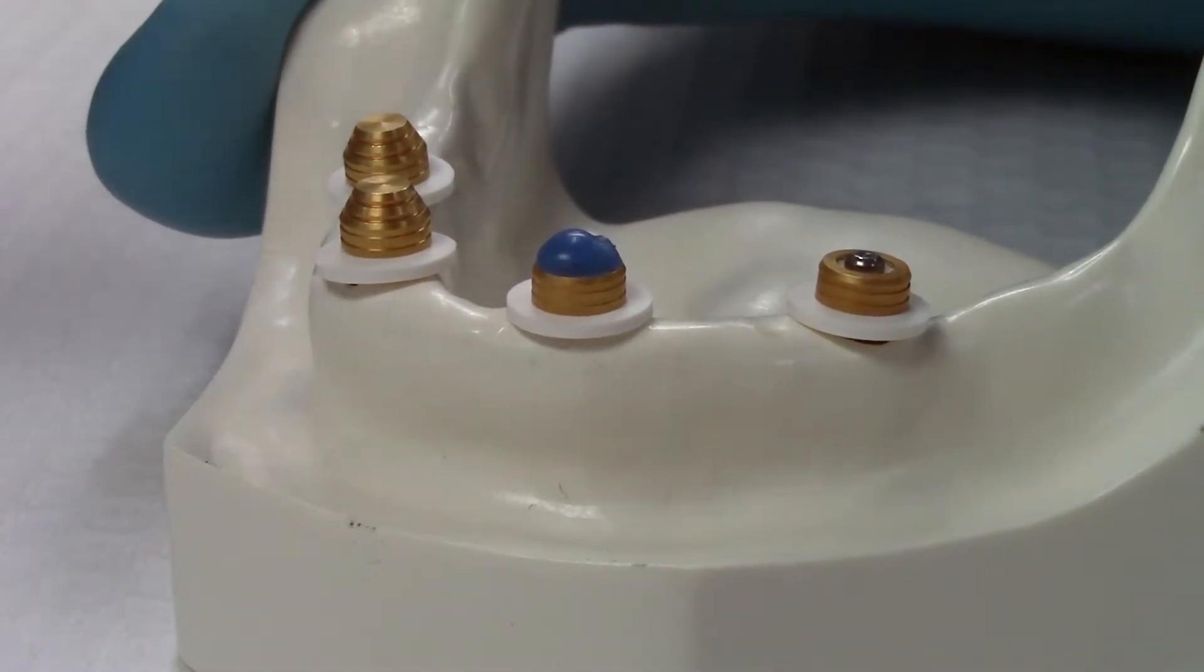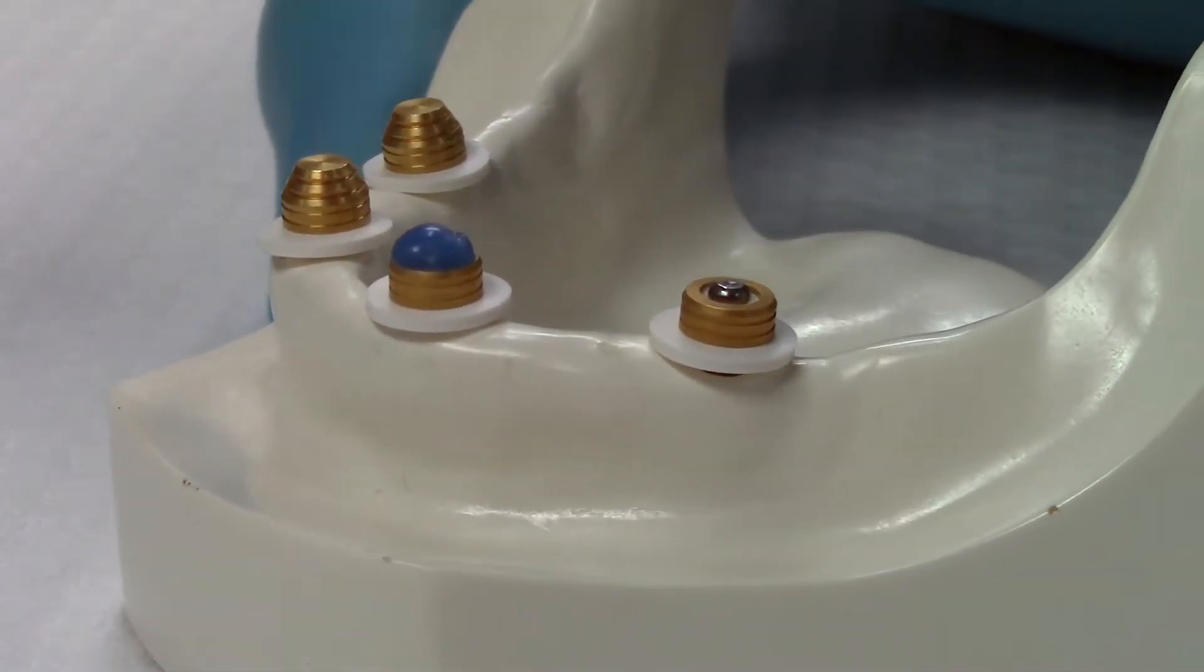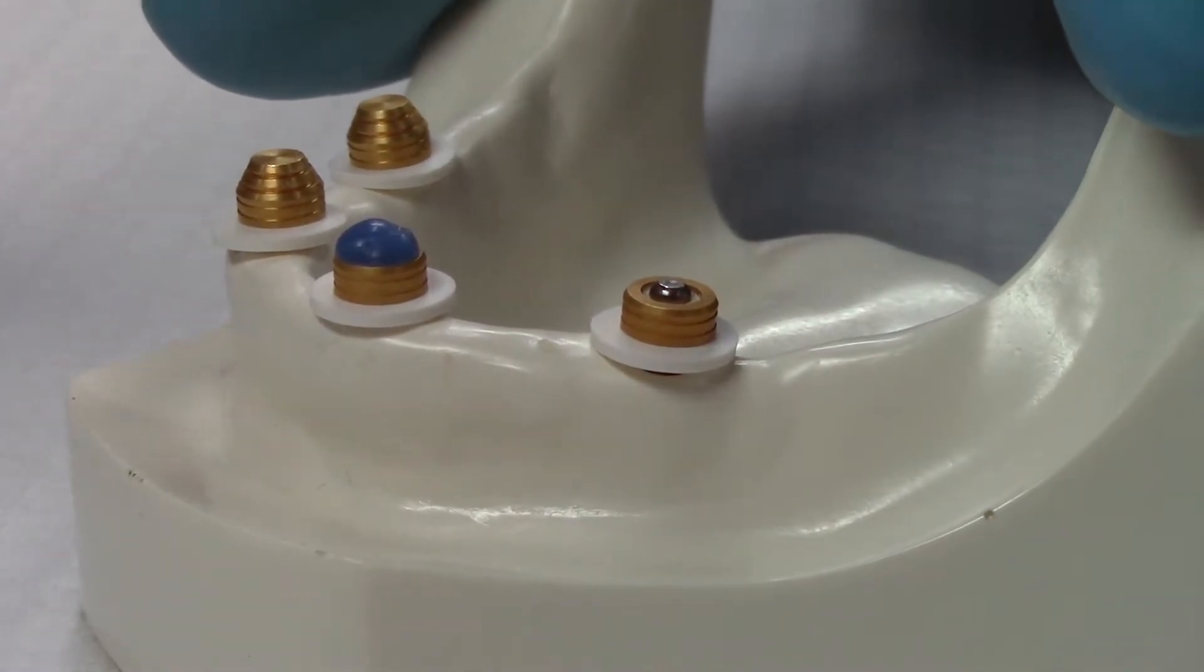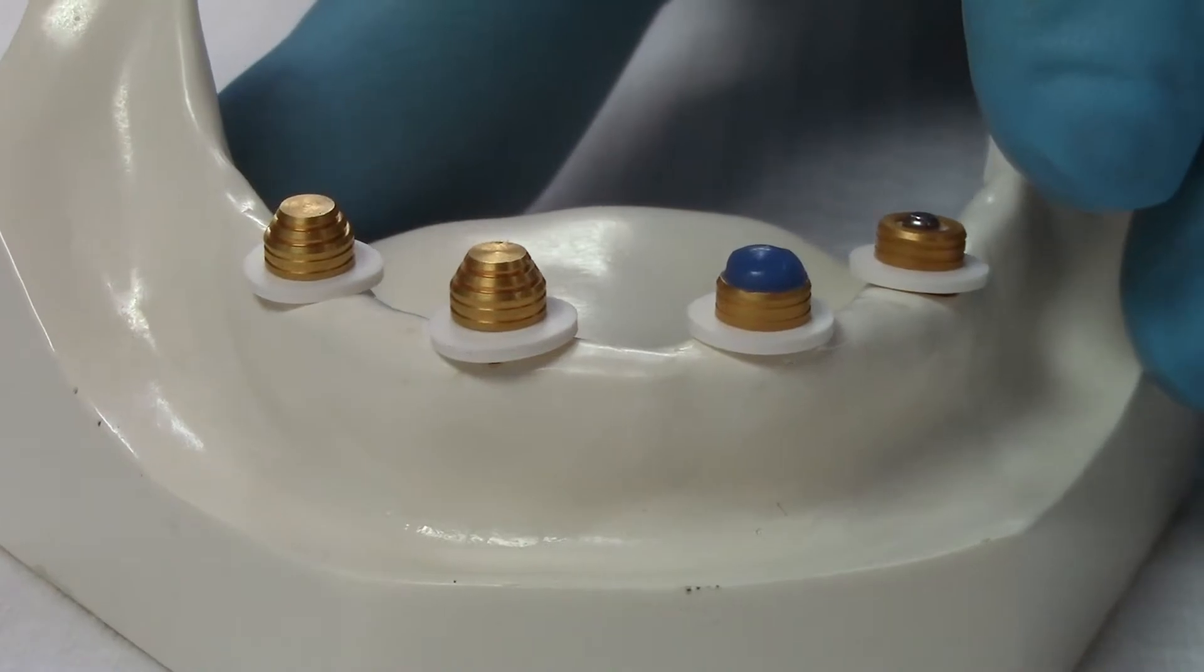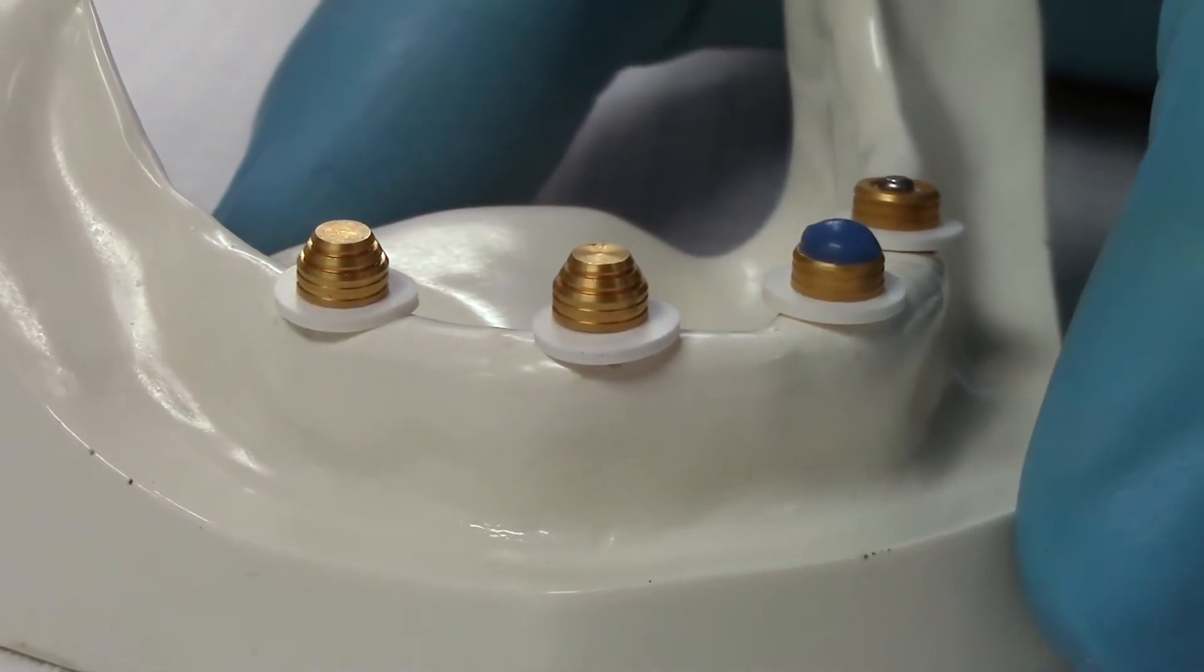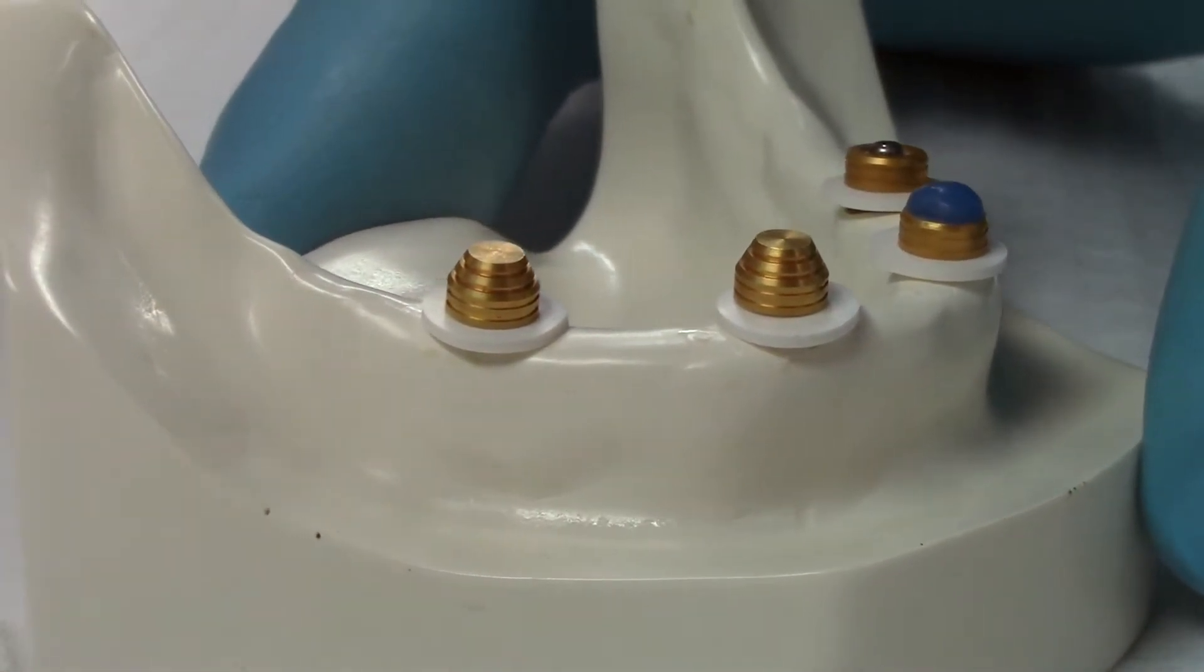Of course, you must block out the occlusal space above the retention ring to allow the ring to move vertically during function without contacting the acrylic of the denture. Otherwise, the acrylic will break.